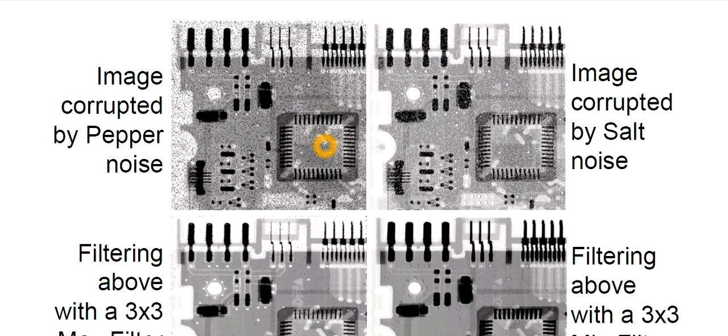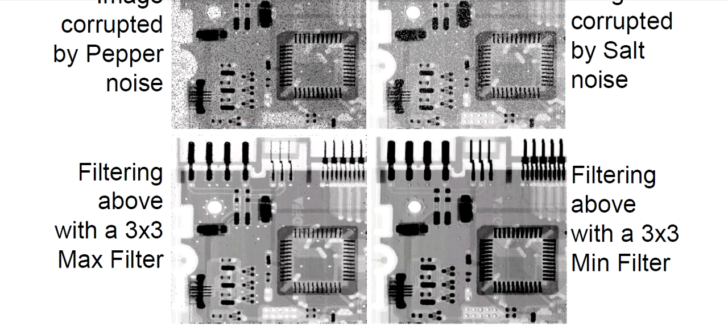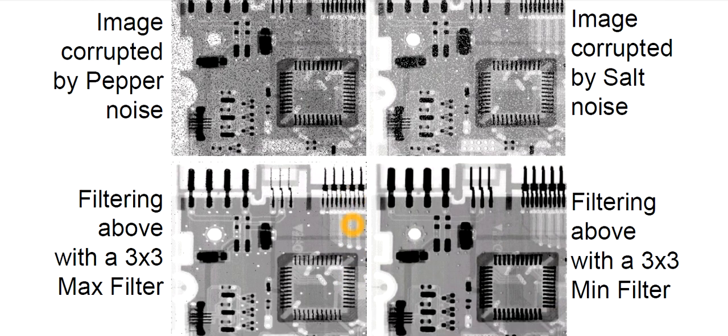First one is the image corrupted by pepper noise. Then this one is the image corrupted by salt noise. As you know that when it is corrupted by pepper noise, we will apply max filter. And when it is corrupted by salt noise, we will apply min filter. And the results are in front of you. You can see the output of these respective filters with respect to the different types of noises.